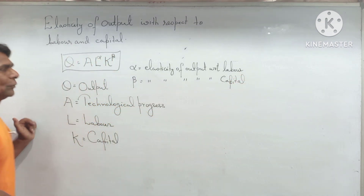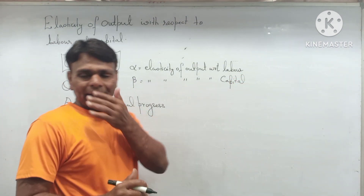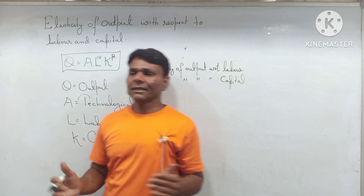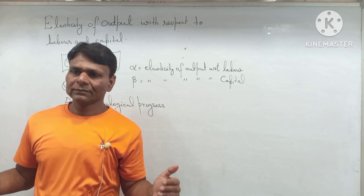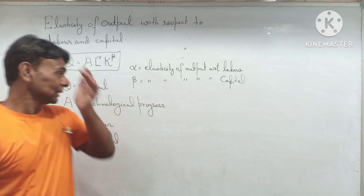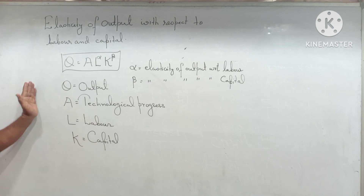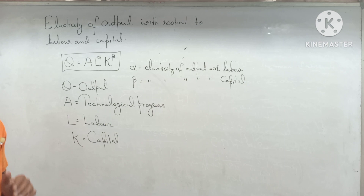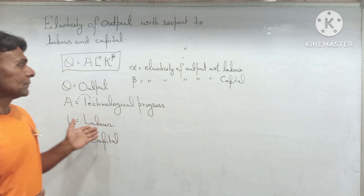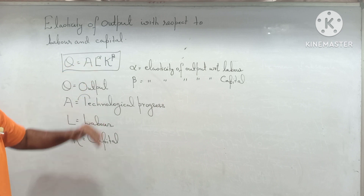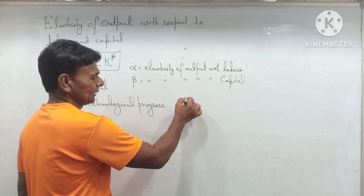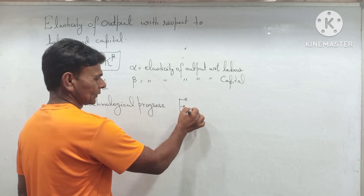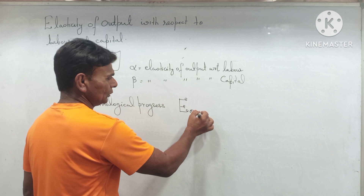Labor and capital respectively — how it can be proved, I will discuss under this video. And if you come to my channel for the first time, please subscribe and press the bell icon for all notifications in order to enjoy videos like this. Today we will see that in the Cobb-Douglas production function, alpha and beta are elasticities of output with respect to labor and capital respectively. So first, let's talk about elasticity of output with respect to labor.